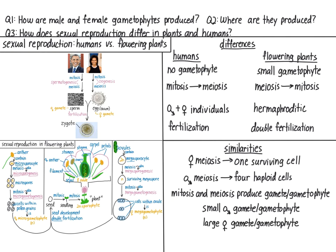Okay, so that's it for this video. With some practice, you should be able to explain how male and female gametophytes are produced, where they're produced, and how sexual reproduction differs in humans and flowering plants. As always, feel free to watch part or all of the video again, and make sure you complete the learning guide. In the next video, we'll examine the production of male and female gametophytes in detail, with some fun pictures from one of my past research projects. See you all then.